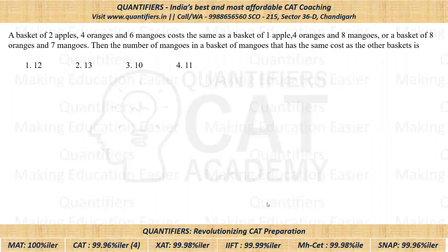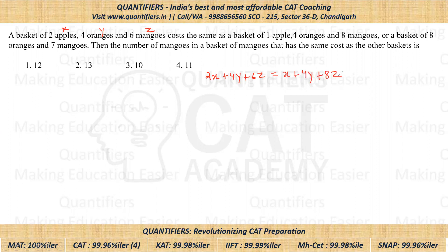I hope all of you have given it a try and read the question carefully. For apples I'm using variable X, for oranges I'm using variable Y, and for mangoes I'm using variable Z. So what they are saying is that twice of X plus four times Y plus six times Z, it will be equal to one apple, four oranges and eight mangoes, which is further equal to a basket of eight oranges, that means eight times Y, and seven mangoes, so seven times Z.